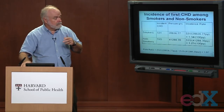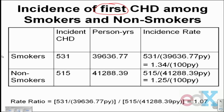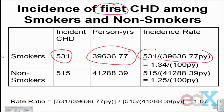The analysis is limited to those who at 1956 did not have coronary heart disease. Looking at incidence of heart disease during the next 24 years, we observe 39,636.77 person years of observation from the smokers — almost 40,000 person years. During that follow-up, 531 of those smokers developed coronary heart disease. Dividing 531 by 39,636.77 person years gives an incidence rate of 1.34 cases per 100 person years of follow-up.